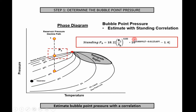Step one is to determine the bubble point pressure. You can get that from lab data, but you can also estimate it with the Standing correlation — a really good correlation for bubble point pressure. Looking at the phase diagram for an oil reservoir: the reservoir pressure starts above the two-phase region, and as it declines and hits the bubble point, that's the pressure at which the first molecules of gas evolve out of solution. Those are the two pressures we need to find.